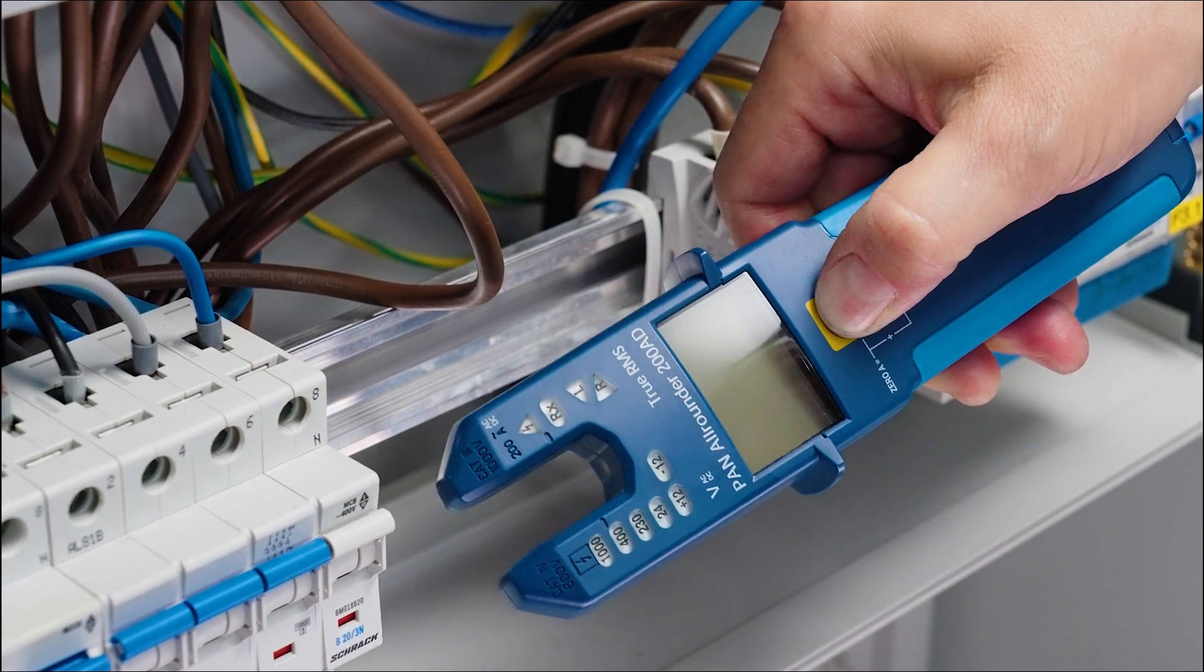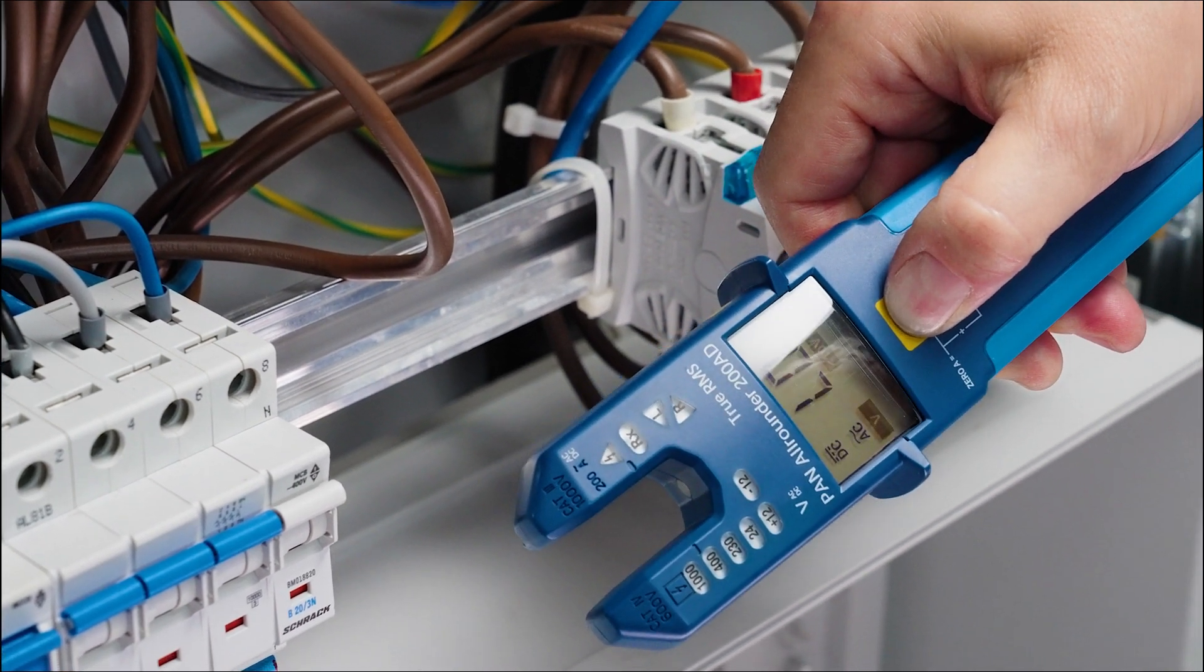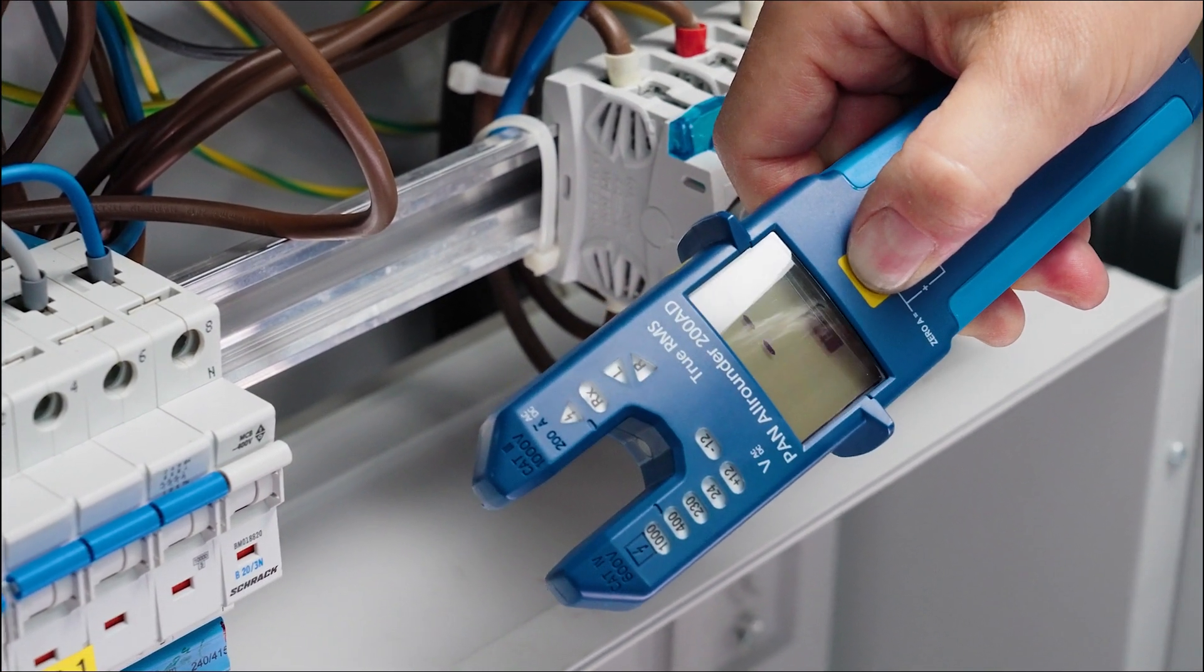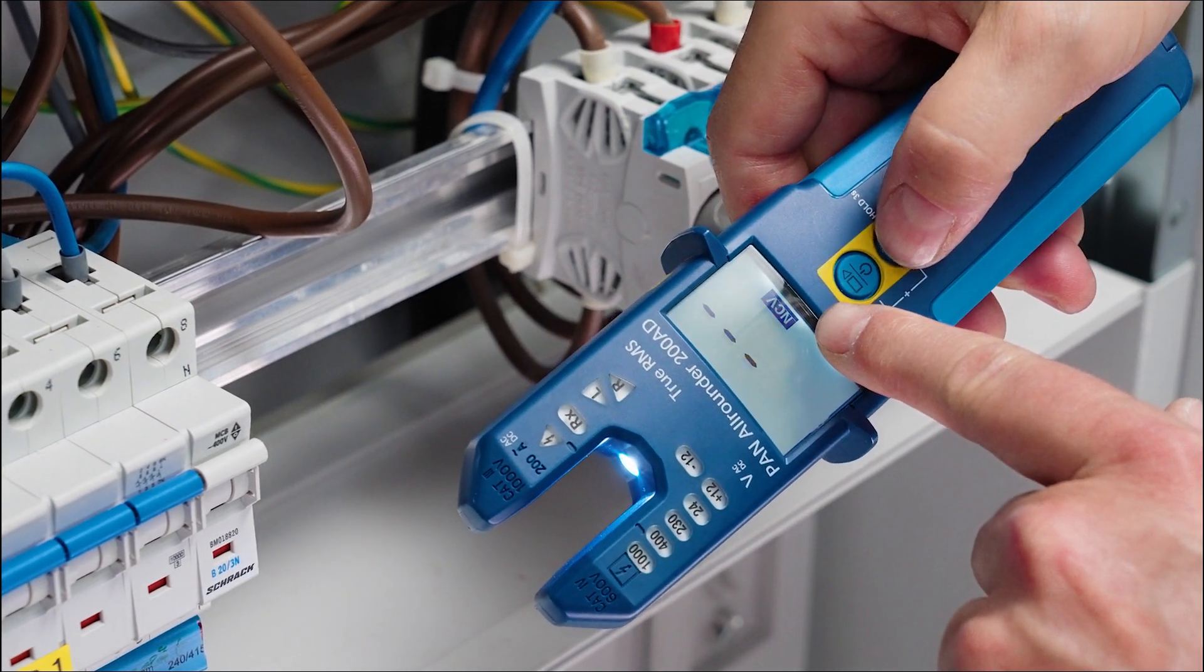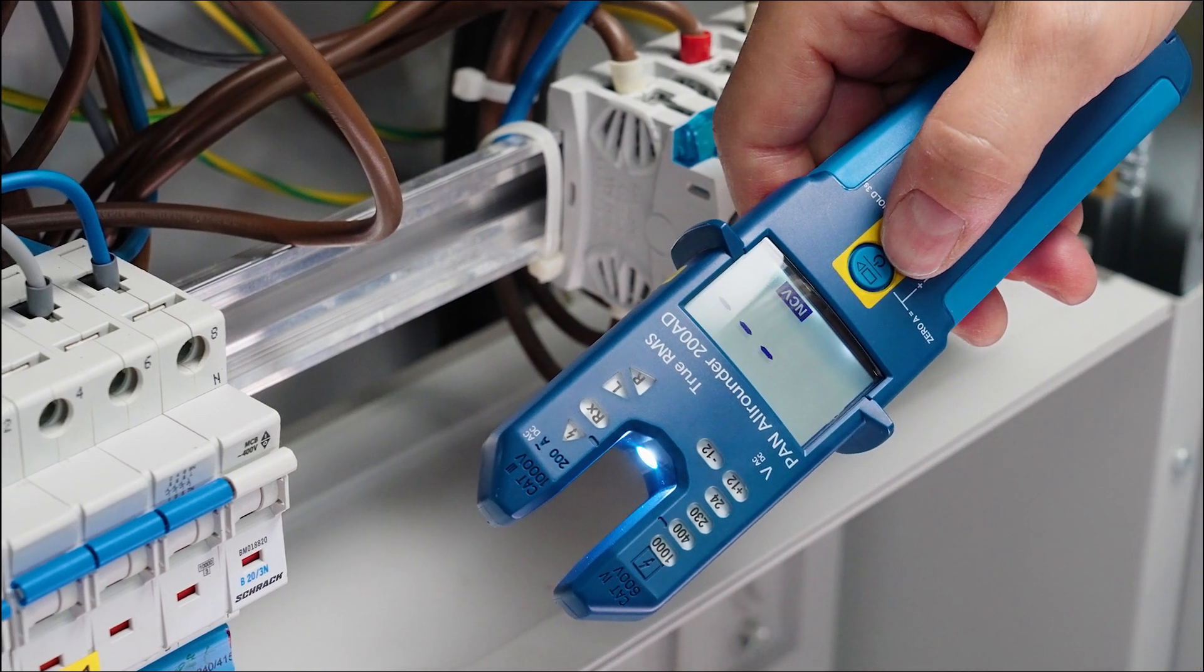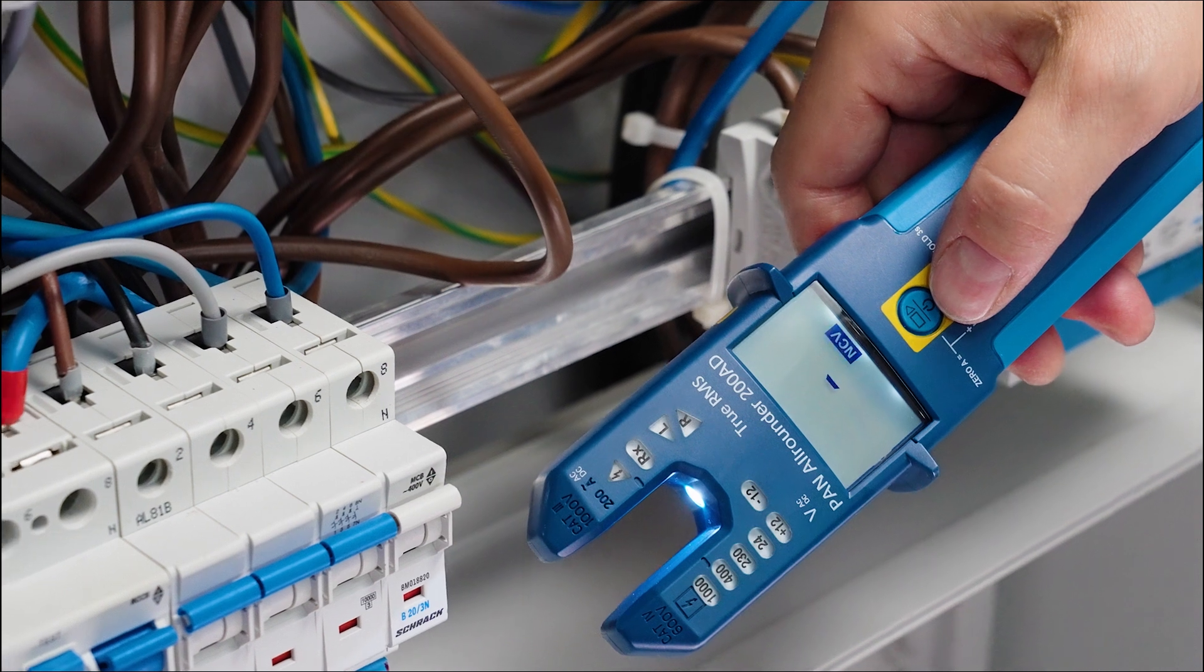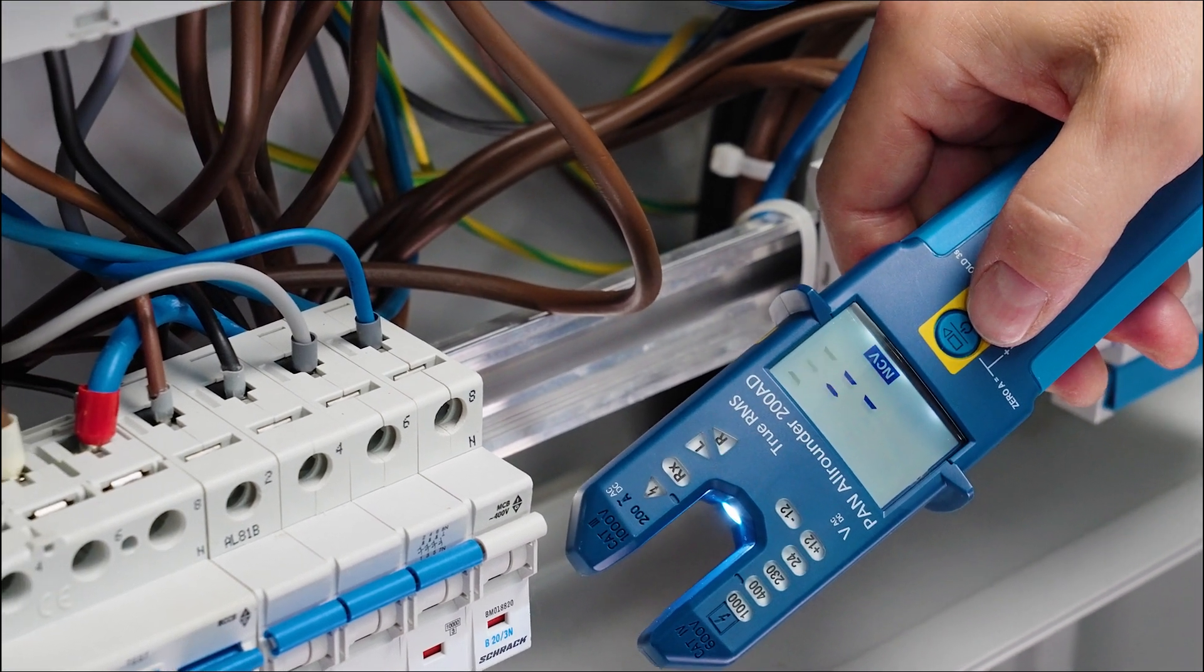To activate this function, we switch the tester on and press the operating button six more times until the display shows NCV for non-contact voltage. When approaching the live conductor, the tester starts beeping and the display shows the strength of the signal in three levels.